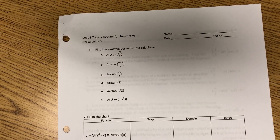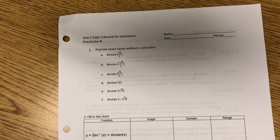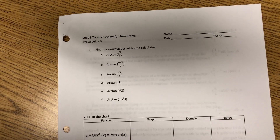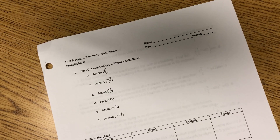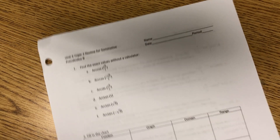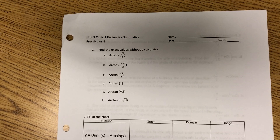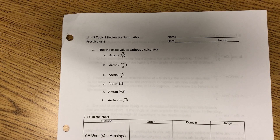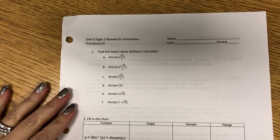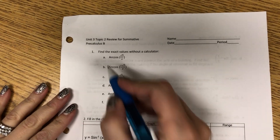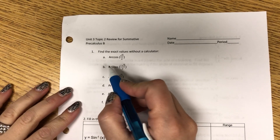This is the review for pre-calculus unit 3 topic 2. We're still dealing with trigonometry and our trig functions, but mostly now it's inverses and some word problems.